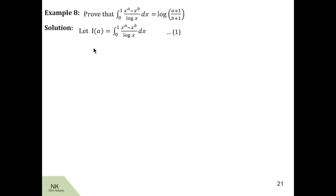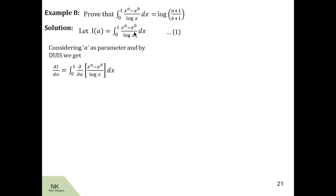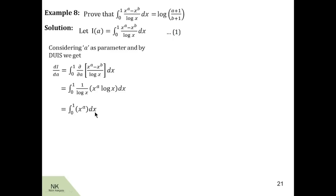By using the DUIS technique, we differentiate both sides with respect to a. On the LHS we get di by da, and on the RHS we get the integral of the partial derivative of the integrand with respect to a, keeping x constant. Since 1 by log x is constant, the derivative of x raised to a is x raised to a into log x. Since there is no a in the second term, the derivative of x raised to b is 0. So after differentiation we get the integral of 1 by log x, into x raised to a log x, dx. The log x terms cancel, giving the integral of x raised to a dx over the limit 0 to 1. The integration of x raised to a is x raised to a plus 1 upon a plus 1. Substituting the limits gives 1 upon a plus 1, so di by da equals 1 upon a plus 1.